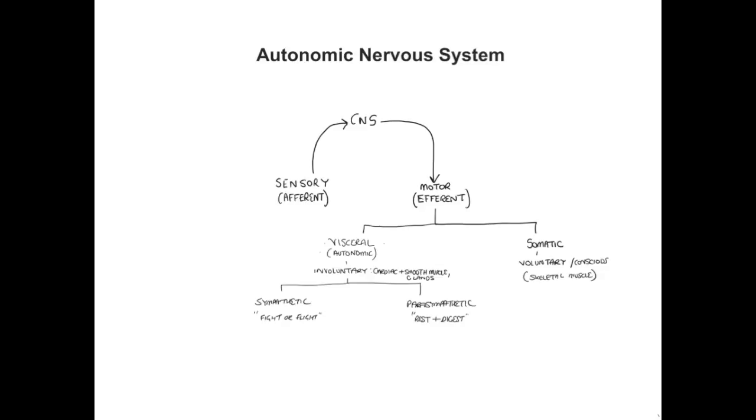So that essentially summarizes the arrangement of the central and peripheral nervous system and where the autonomic nervous system fits into all of this.